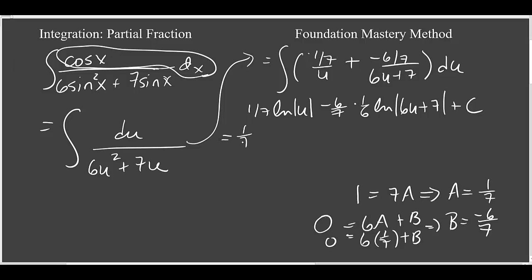So now, let's just simplify this a little bit. We have 1-seventh ln the absolute value of u, minus, and the sixes cancel, 1-seventh ln the absolute value of 6u plus 7, plus the constant of integration.